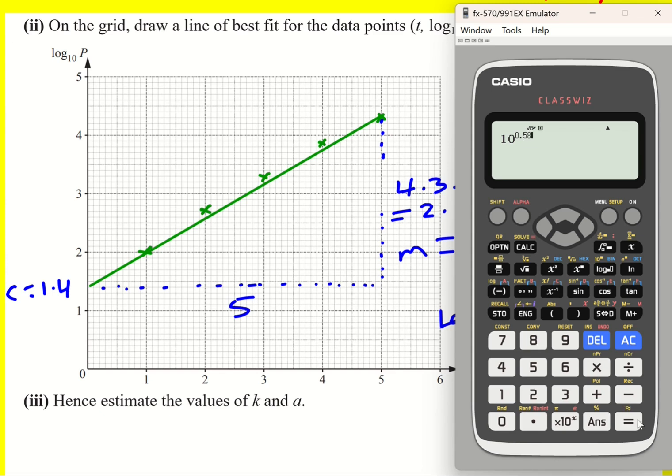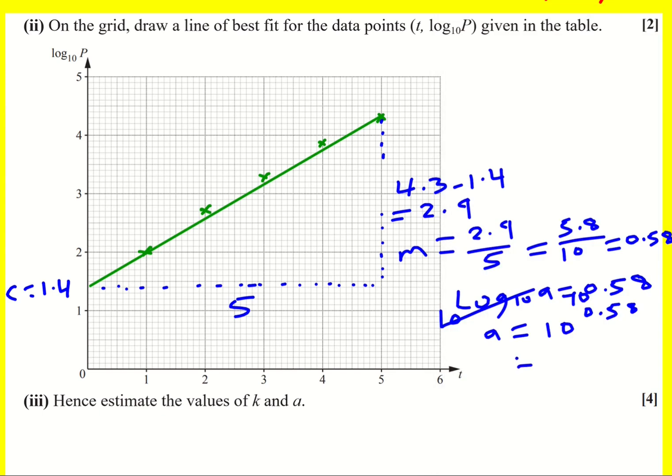I get 3.801 which I'm rounding to three significant figures. We can't be that accurate really but that's what we tend to do if unsure. Having a look, answers were accepted, it all depends on your line of best fit but between 3.16 and 5.01, so I'm definitely in the range here for a.